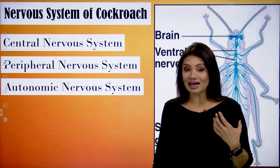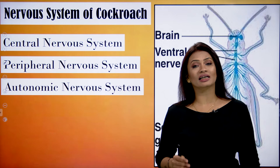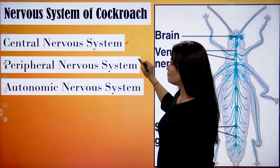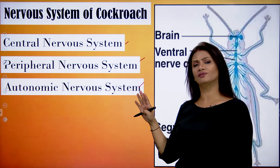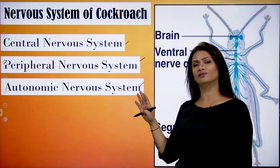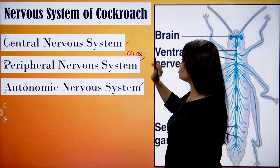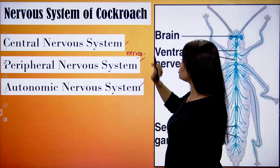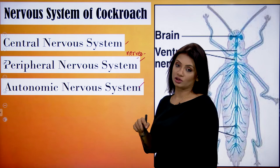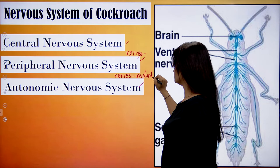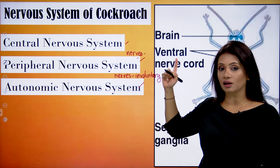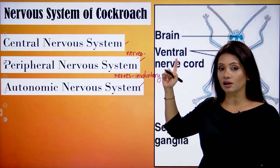Just like our body, even the cockroach has a well-developed nervous system, though not as advanced as ours, divided into central, peripheral and autonomic nervous systems. The central nervous system deals with the major organs; the peripheral nervous system deals with nerves for voluntary activities; and the autonomic nervous system deals with nerves for involuntary activities.